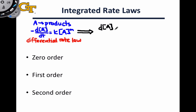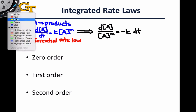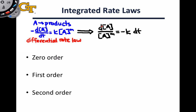So if, for example, we multiply both sides through by negative 1 and divide by the concentration of A to the m power, we get all the molarity of A terms on one side and negative K dT on the other side. To eliminate these differentials, since we've separated the variables on both sides of this equation, we can integrate both sides. The resulting equation is known as the integrated rate law.